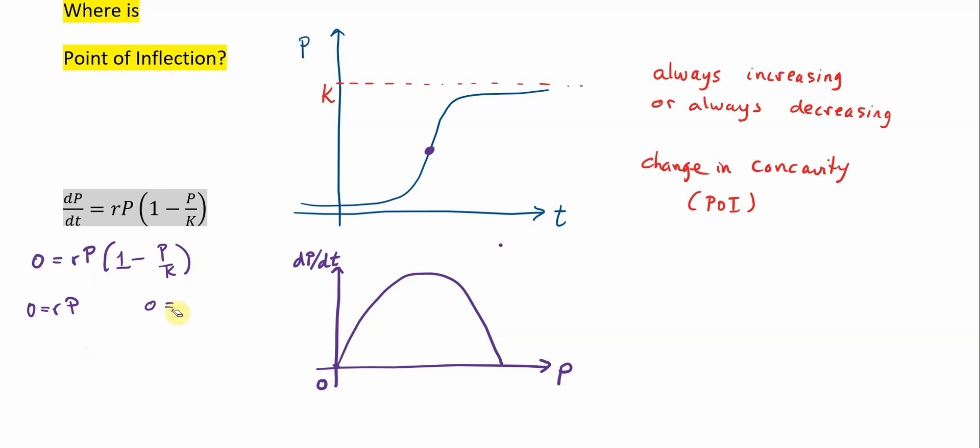And zero equals one minus P over K. So here, if P is equal to zero, that's going to be one of our solutions. And again, this is going to be an open circle, because the population isn't ever zero.